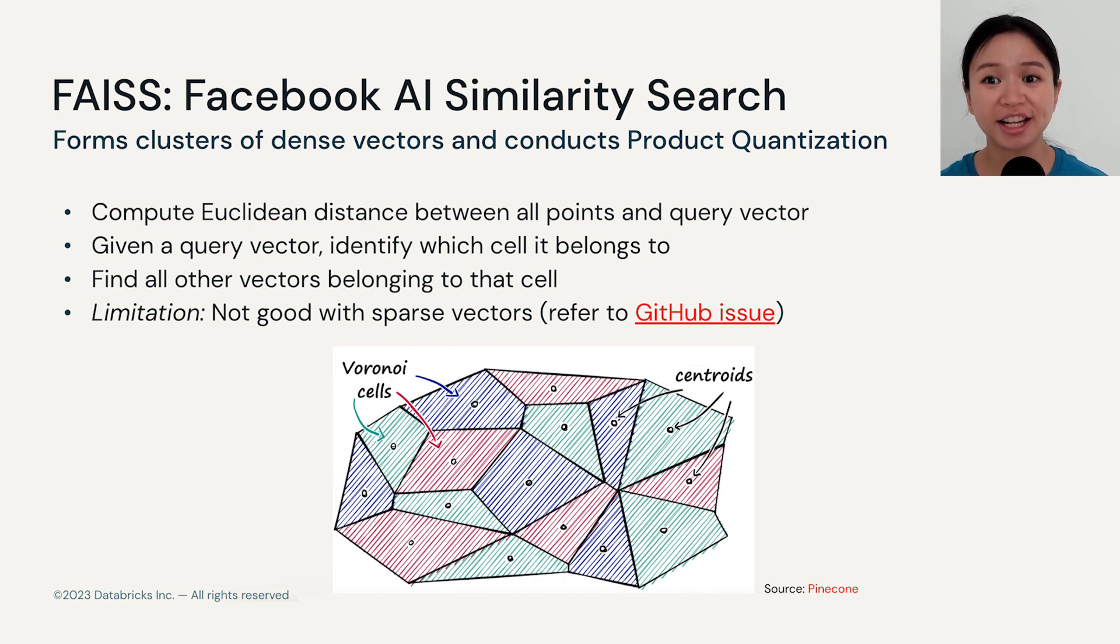We will now move on to talking a bit more about the vector indexing algorithms. FAISS stands for Facebook AI similarity search. It is a clustering algorithm that computes L2 Euclidean distance between the query vectors and all the other points. As you can imagine, the computation time will only increase as you have more and more vectors.